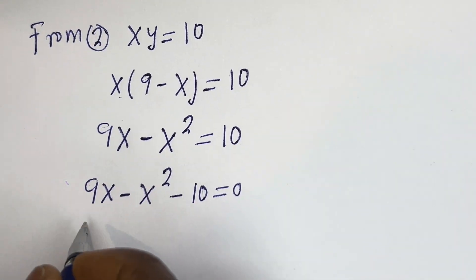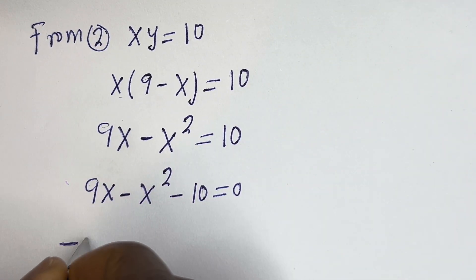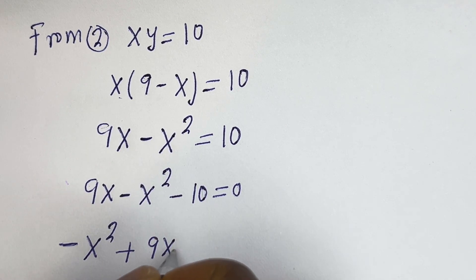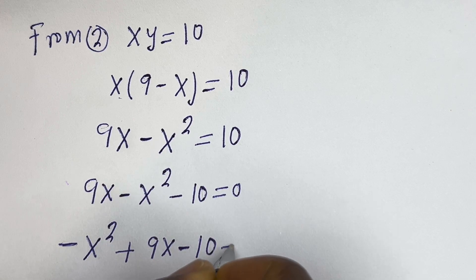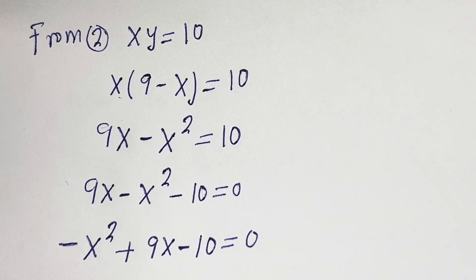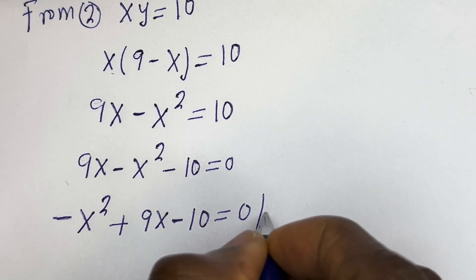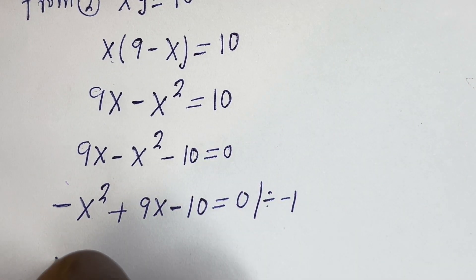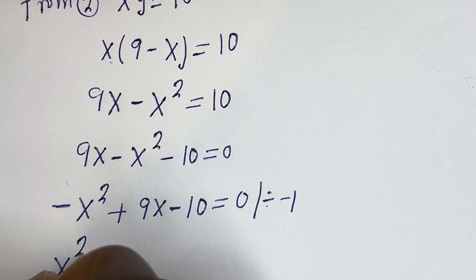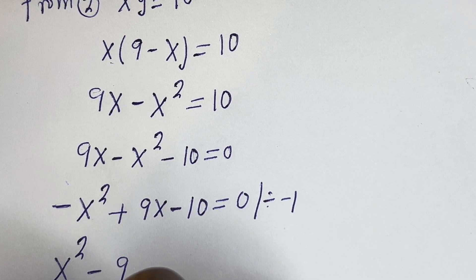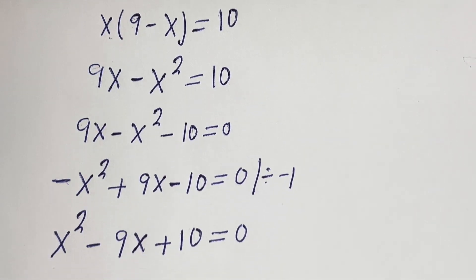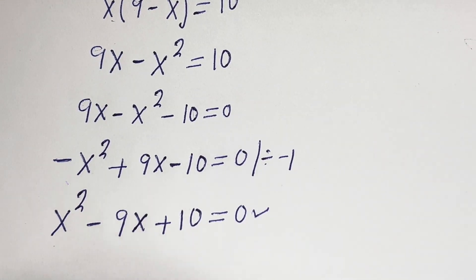Let's put this in standard form. We have minus x squared plus 9x minus 10 is equal to 0. Dividing all through by minus 1, we get x squared minus 9x plus 10 is equal to 0. This is a quadratic equation.